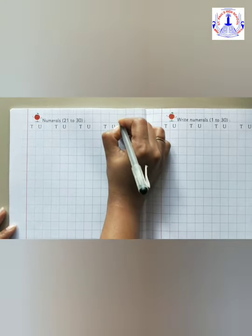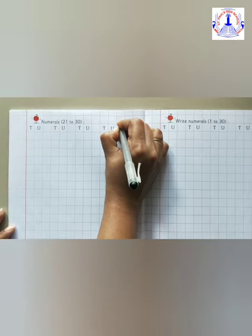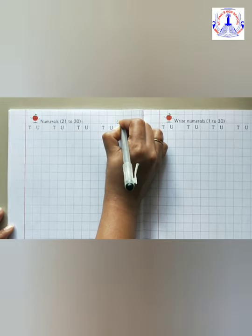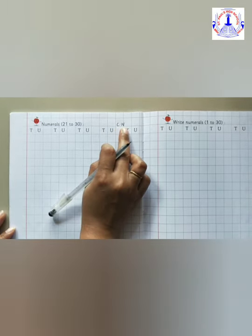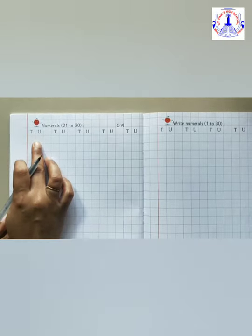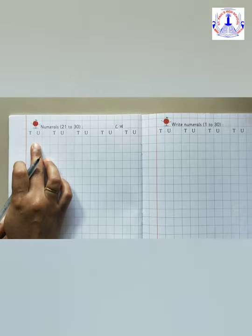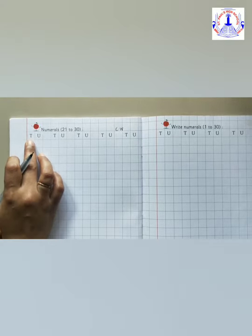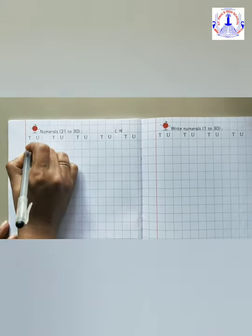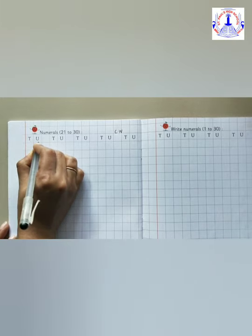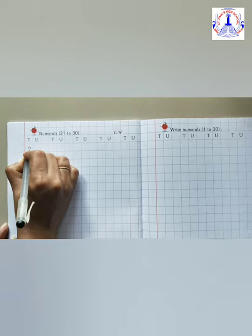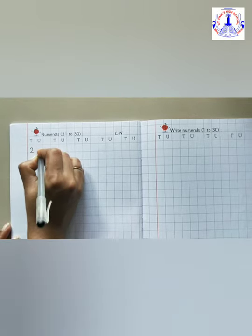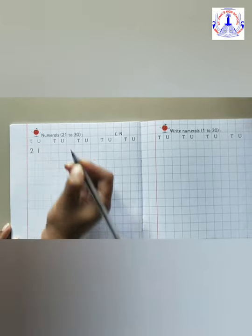Write here C.W. Now children, here we are going to start writing number from number 21. So, tens and units. Below T, that is tens, we will write number 2, 21.